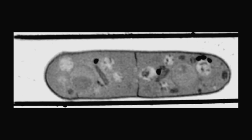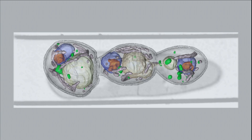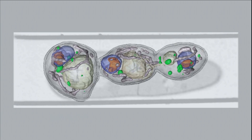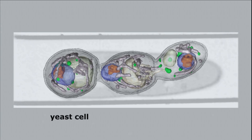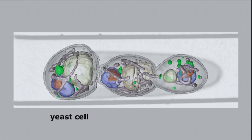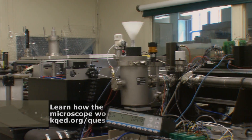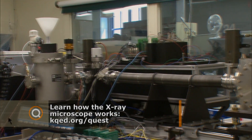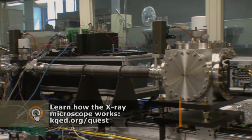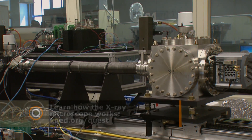We use X-rays for imaging because they have a shorter wavelength than visible light. Because their wavelengths are shorter than visible light rays, X-rays illuminate more detail in a smaller area of the cell, so you can see much smaller features inside the cell than you can using light microscopy. This 15-foot-long microscope, built from scratch, also emits a special kind of X-ray.